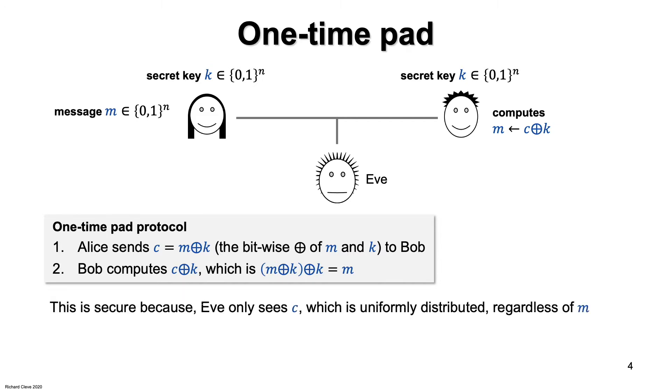This is secure because what does Eve learn? Note that regardless of what m is, the distribution of C is uniform over all the n-bit strings. So what Eve sees is just a uniformly distributed string uncorrelated with m. Therefore, Eve acquires absolutely no information about the bits of m.